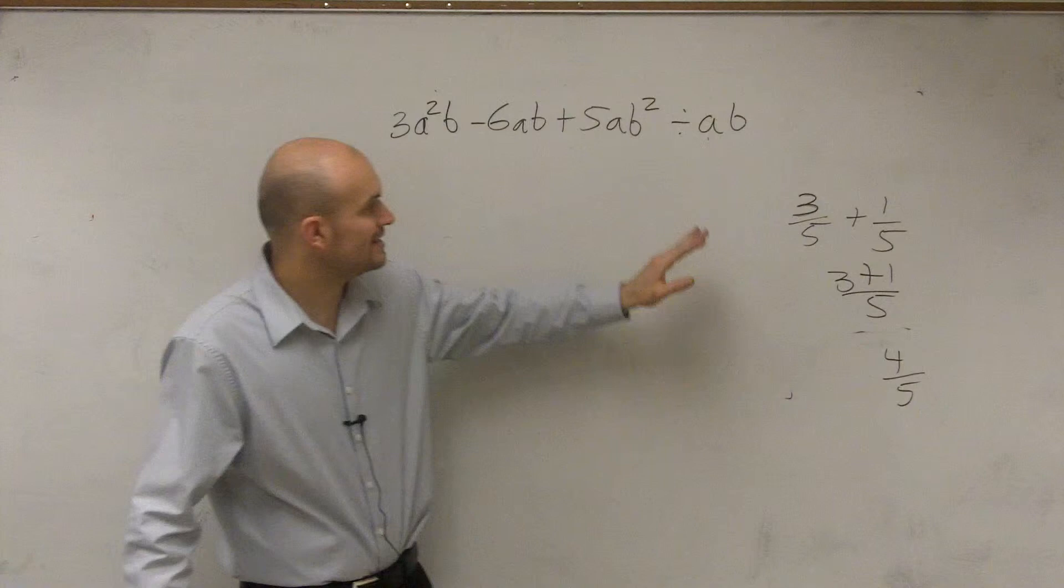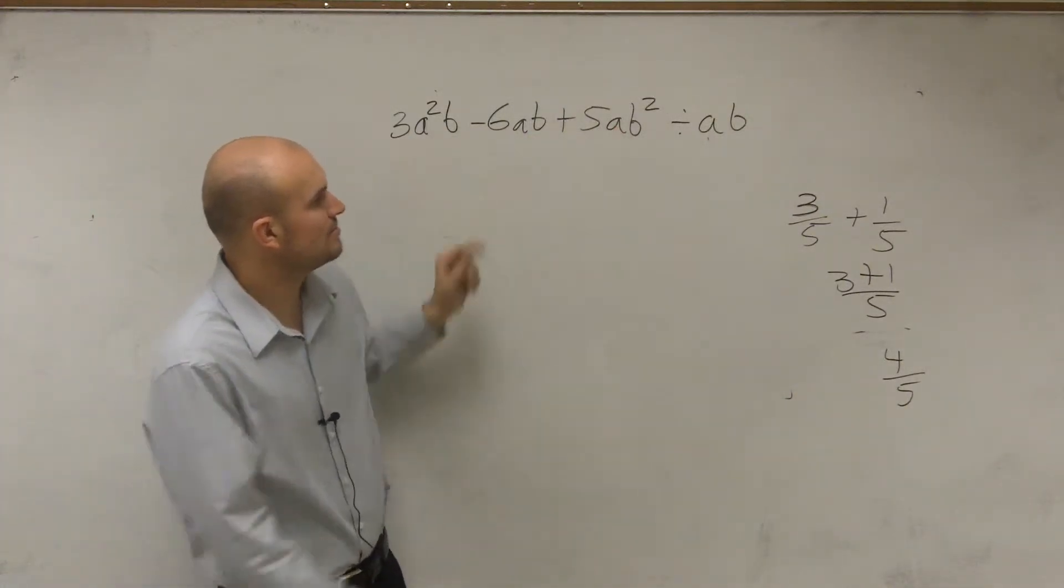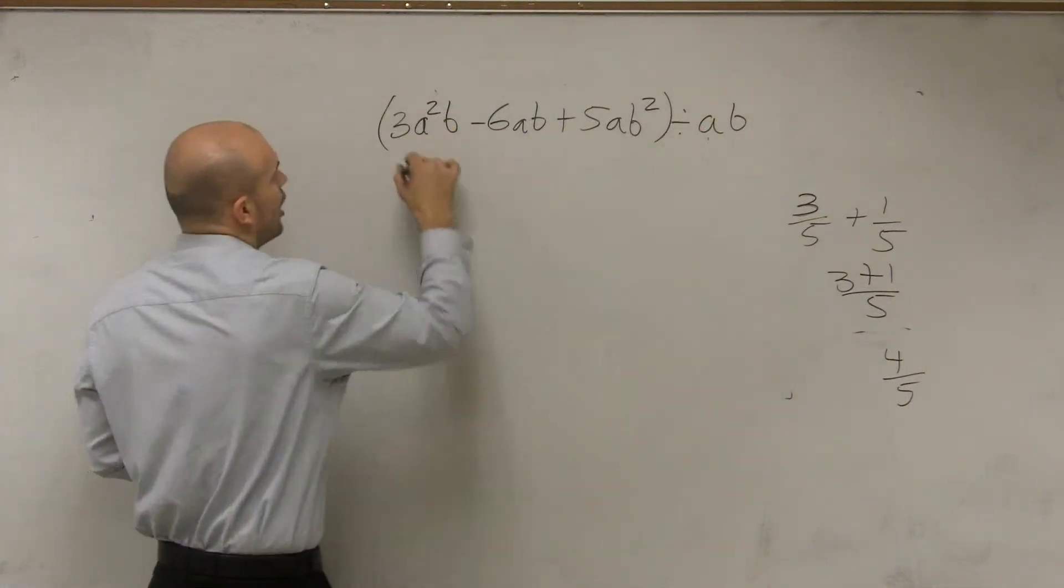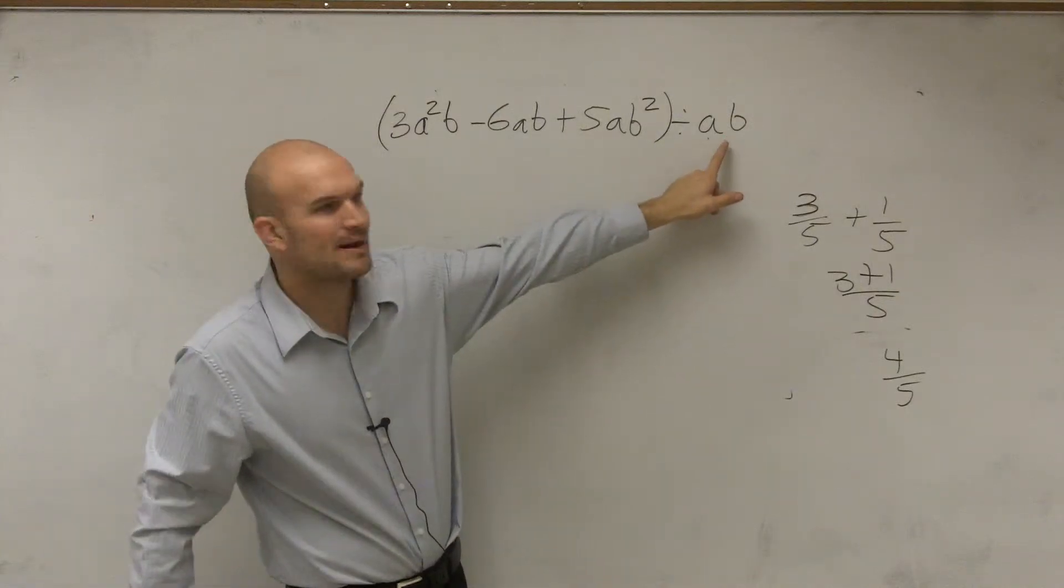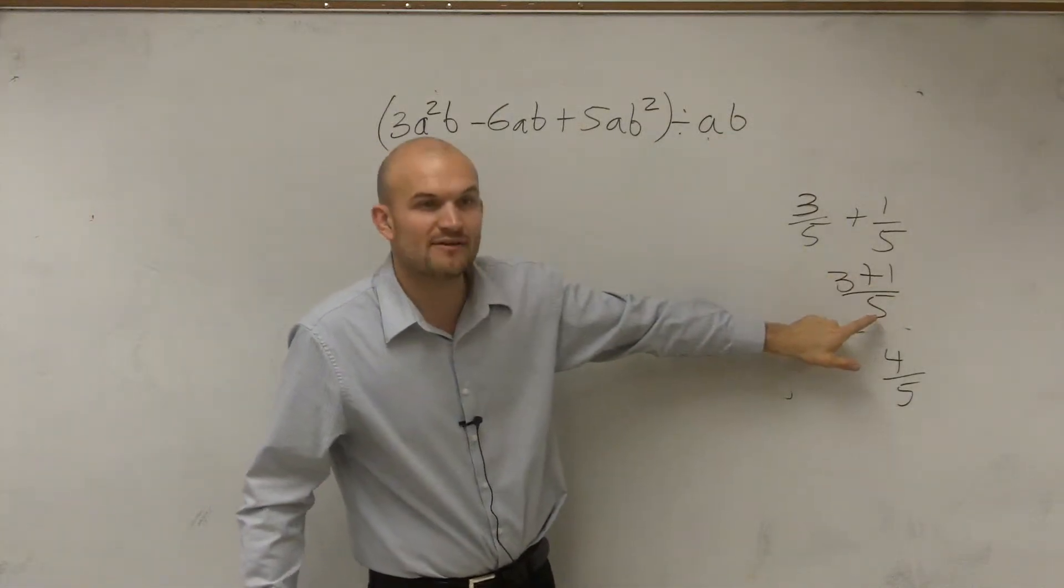So what we have is all three of these terms, I should probably put these in parentheses, all three of these terms are being divided by AB. It's like 3 and 1 being divided by 5.